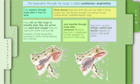The respiration through the lungs is called pulmonary respiration. Once mature, frogs lose their gills and are able to bring oxygen into their bodies through lungs. Frogs respire through lungs when they live on land. They only breathe through lungs when necessary because they lack a diaphragm to help regulate the pressure in their lungs. Frogs must use their throats, nostrils and mouths together to bring in and expel gases. Frogs rely on their lungs to breathe when they are active and need more oxygen than skin respiration alone can provide, like when they are swimming in water, during leaping and jumping.